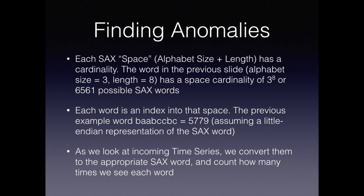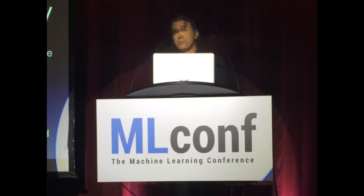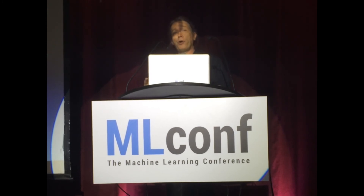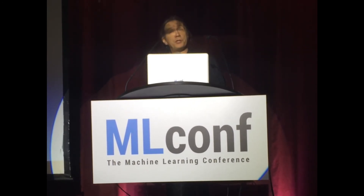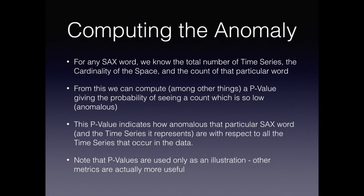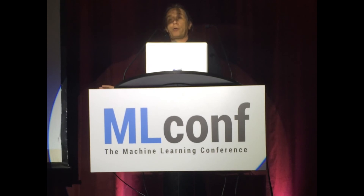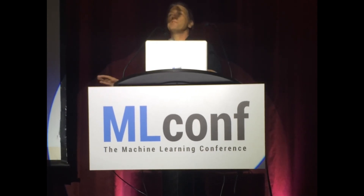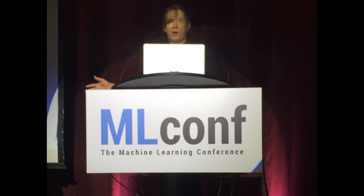I can use that to compute how anomalous a situation is, because I know the total number of time series I've seen, the number of instances of a particular SAX word, and the space in which it exists. This is sufficient information to compute a p-value of how probable it is that I will have seen so few occurrences — in other words, how anomalous a time series might have been. The p-value isn't the only metric you want to compute here, or even the best one; we used it as an example because everyone knows what it is.